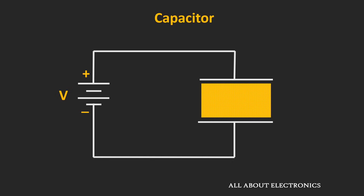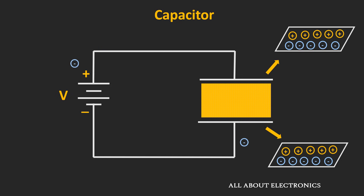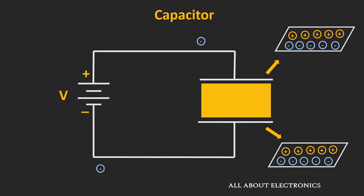Before the application of voltage, the two conducting plates of this capacitor are electrically neutral — meaning they have an equal amount of positive as well as negative charge. But once voltage is applied, the electrons from the top plate are attracted towards the positive terminal of the battery, and through the negative terminal, electrons are pushed towards the bottom plate. Because of the dielectric material, the electrons collected at the bottom plate are not able to cross this barrier, and over time, electrons accumulate at the bottom plate.